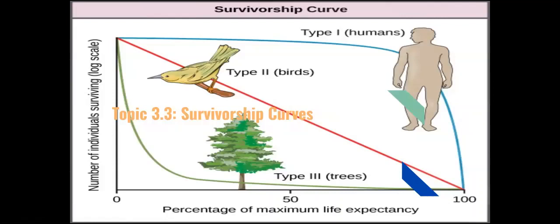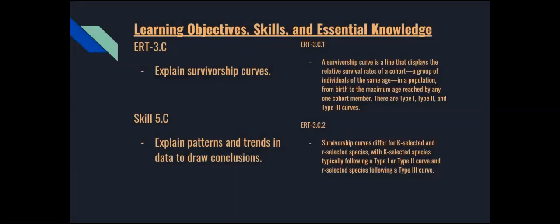You can see an example of the survivorship curves on the screen right in front of you. This is going to be going over a type of graph that you probably have never seen before, so make sure you're paying attention and taking down notes. For our learning objective today, we're simply going to be able to explain survivorship curves. The skill you're going to be working on is explaining patterns and trends in data to draw conclusions. For our central knowledge, we need to describe what a survivorship curve is, the type 1, 2, and 3, and the differences between those, and we also need to relate this to K-selected and R-selected species, which you learned in topic 3.2.